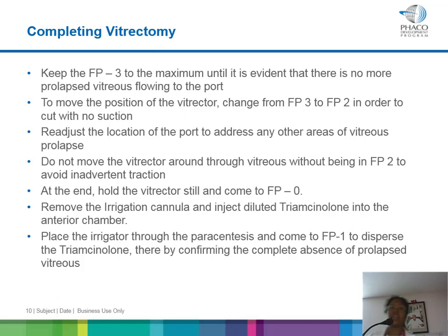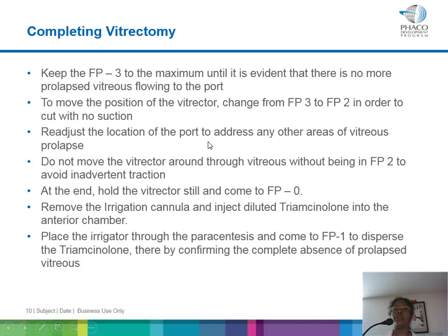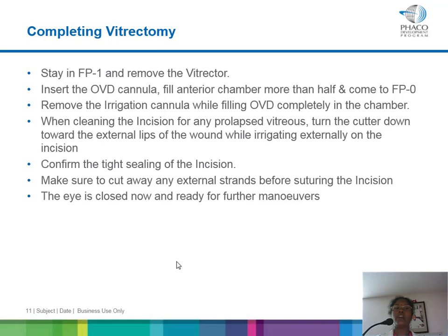Once you are sure everything is cut, go to foot pedal 3 and aspirate all cut vitreous. Readjust the port location to address any other areas of vitreous prolapse. Do not move the vitrector around vitreous without being in foot pedal 2. At the end, hold the vitrector still, come to foot pedal 0 in irrigation mode, remove the irrigation cannula, and inject diluted triamcinolone into the anterior chamber to check for any remnants. Place the irrigator through the paracentesis and come to foot pedal 1 to disperse the triamcinolone, confirming complete absence of vitreous.